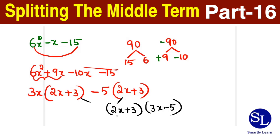In this example, x has a coefficient in both the terms. As I said before, at least one term should have a coefficient if you have a coefficient for the x squared term. So 6x squared minus x minus 15 is split as 2x plus 3 into 3x minus 5.